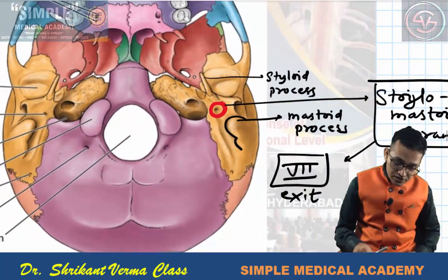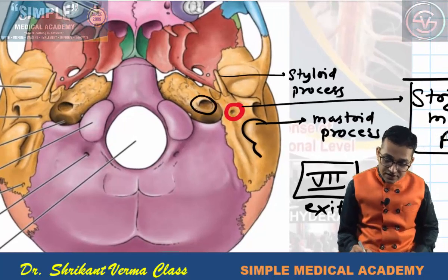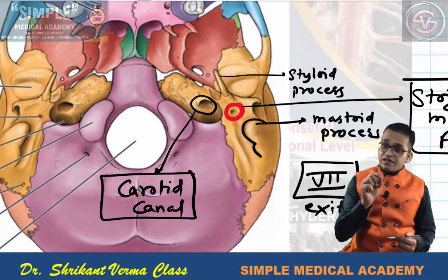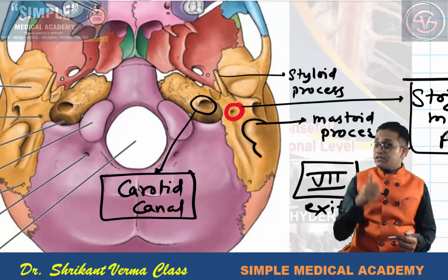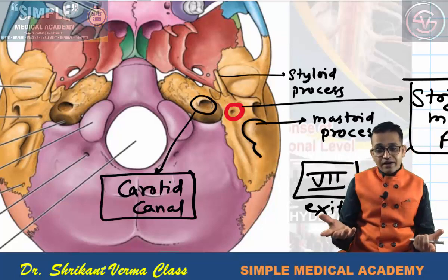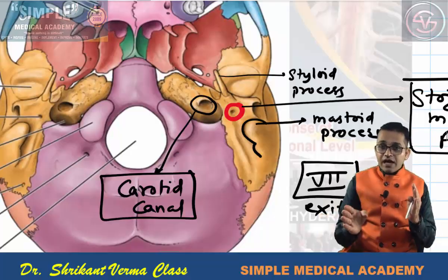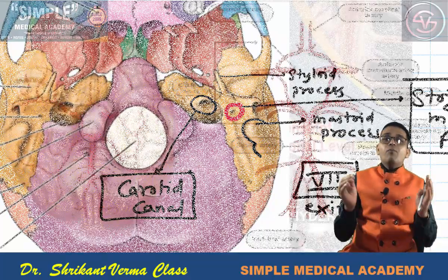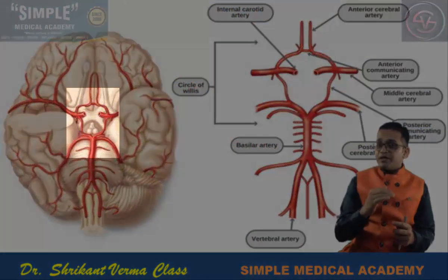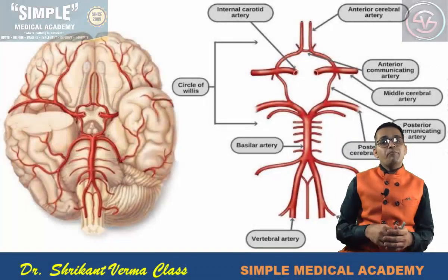Another foramen visible here is the carotid canal. The internal carotid artery enters within the cranial cavity through this carotid canal, while the vertebral artery enters through the foramen magnum. Both the internal carotid artery and the vertebral artery make a circular anastomosis at the base of the brain, known as the circle of Willis, which will be discussed later in the blood supply of the brain.